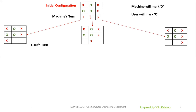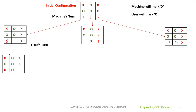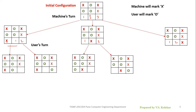Consider this scenario: if the machine marks X in the first cell, then the user can mark O in either the first or second empty cell. Similarly for the other machine moves, the user has two empty cells to choose from. However, in one case the user does not need to mark O because we already have all three X's on a straight vertical line — the machine has won that game, so there is no need for the user to mark.